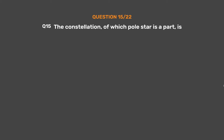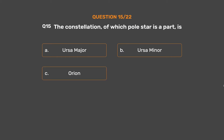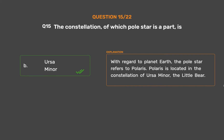Question number 15. The constellation of which Polestar is a part is: Option A: Ursa Major. Option B: Ursa Minor. Option C: Orion. Option D: Scorpio. The correct answer is Option B: Ursa Minor. With regard to planet Earth, the Polestar refers to Polaris. Polaris is located in the constellation of Ursa Minor, the little bear.